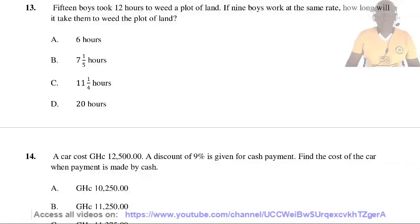Question 13. 15 boys took 12 hours to weed a plot of land. If 9 boys work at the same rate, how long would it take them? 15 boys took 12 hours, therefore 9 boys will take more. So 15 divided by 9 times 12 hours: 3 goes into 15 five times, 3 goes into 9 three times, giving 5 times 4, which equals 20 hours. So the answer is D.